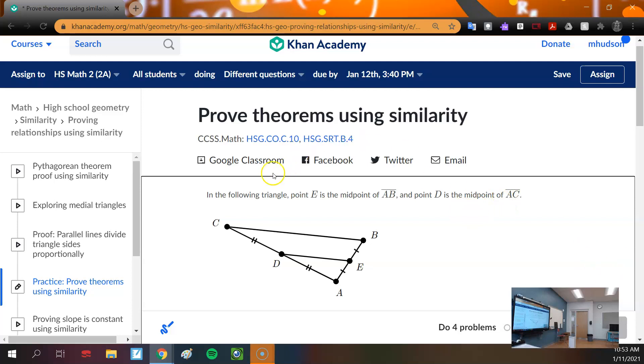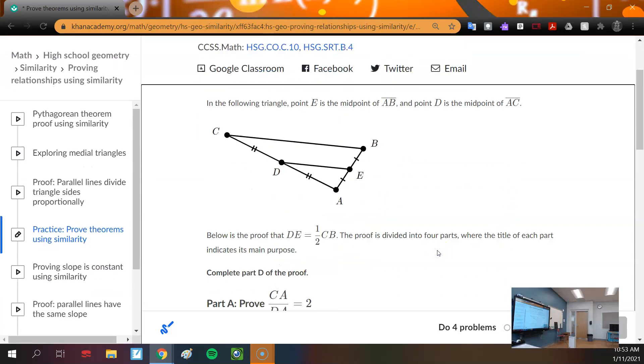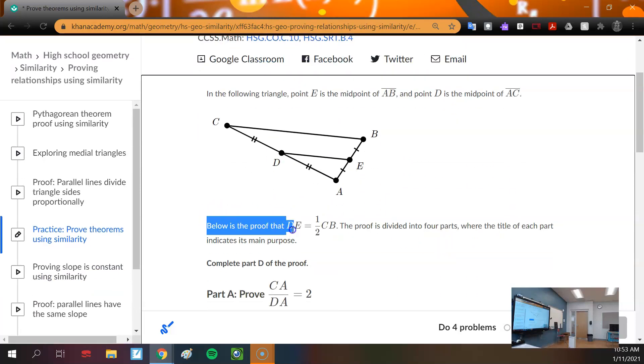So it says, in the following triangle, point E is the midpoint of AB. So they have marked out our equidistant congruent lengths here, right? Point D is the midpoint of AC. Below is the proof that therefore DE is one half of CB. They are proving that this length DE is half of the length CB.